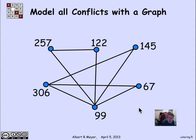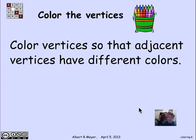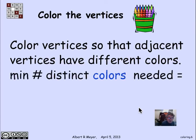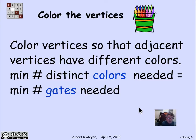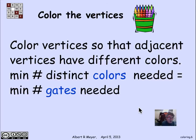Now we can talk abstractly about the coloring problem: assign colors to the vertices such that no two adjacent vertices have the same color. Adjacent vertices should have different colors. From the description of how we derive this graph from the aircraft schedules, the minimum number of distinct colors needed to color the graph corresponds to the minimum number of gates needed to serve the aircraft.